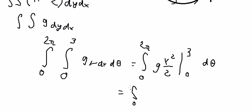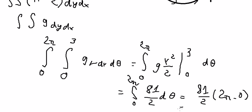3 in here and we got about 81 over 2 multiplied by 2π minus 0, so you got about 81π.